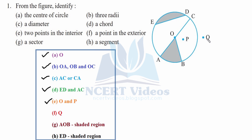F part: a point in the exterior — there is one point here in the exterior. G part: a sector. A sector is formed with an arc followed by two radii, so OB and OA are the two radii. This sector is named AOB. The shaded region is your G part.